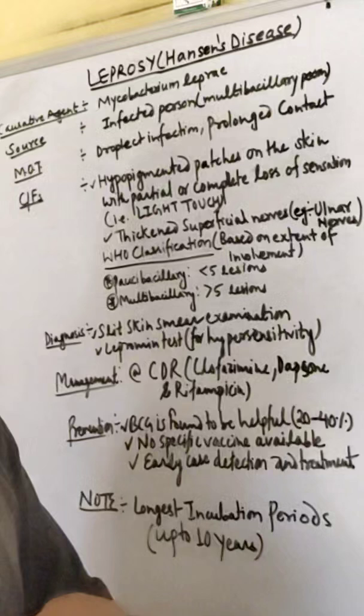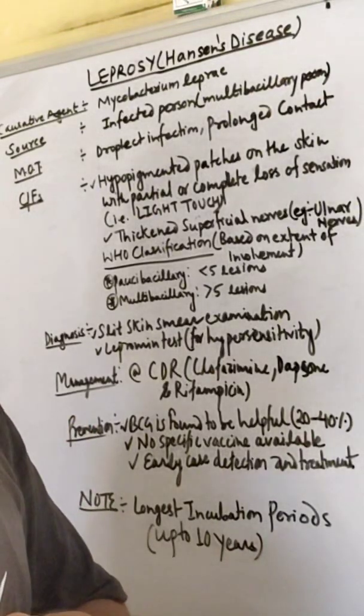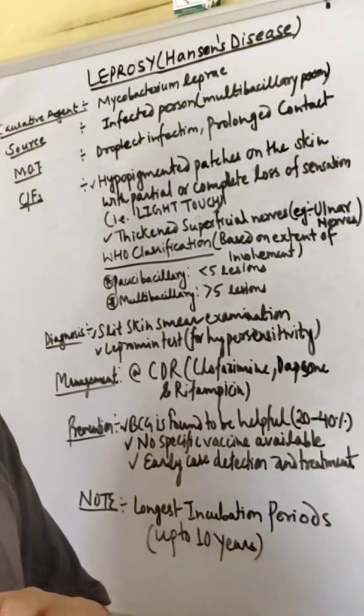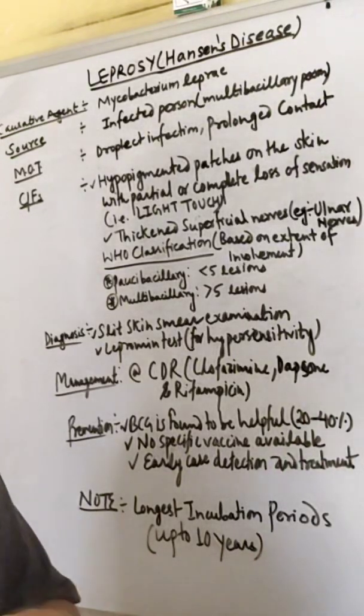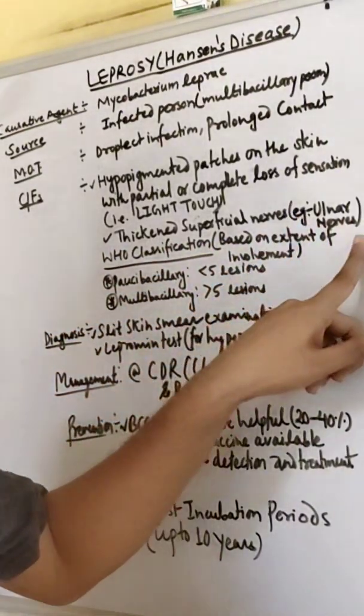When we pinch the hand or fingers there will be no feeling of sensation. We call this loss of light touch. Thickened superficial nerves will also be affected in case of leprosy. Nerves can be involved.